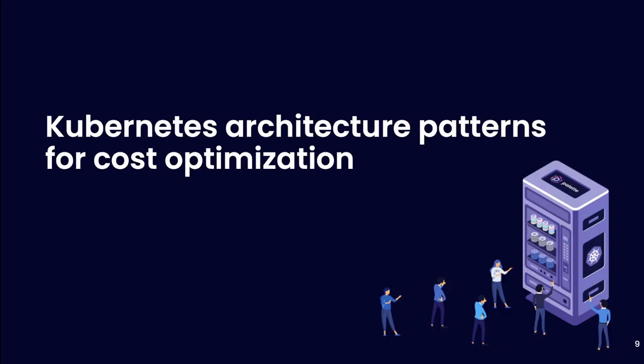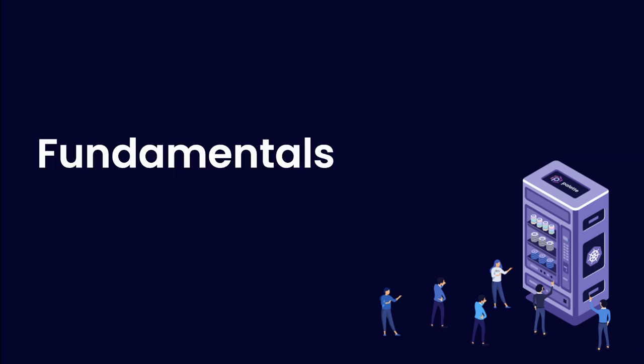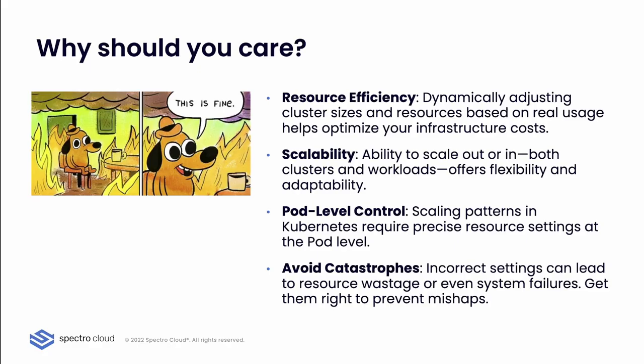Next, let's look at Kubernetes architecture patterns for cost optimization, starting with the fundamentals and answering the question: why should you care about those patterns? The easy answer is that those patterns definitely have an impact on your Kubernetes bill at the end of the month. Things like resource efficiency give you the ability to adjust cluster size and resources based on real usage, providing scalability capabilities both for scaling out during bursty periods and scaling in to reduce the number of pods.